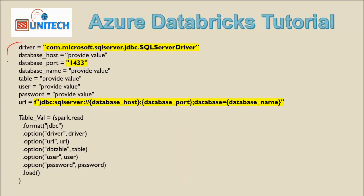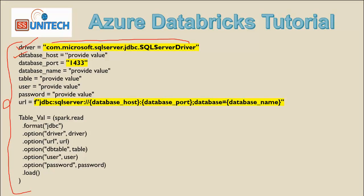We have to use JDBC connectivity and use the URL. Basically we are going to use the JDBC driver to connect with Azure SQL. After that we have to add the database host, which is nothing but the server name, and then the port — for SQL it should be 1433.